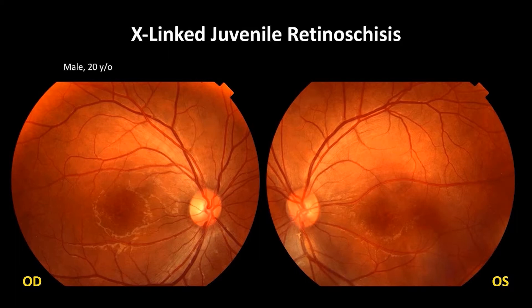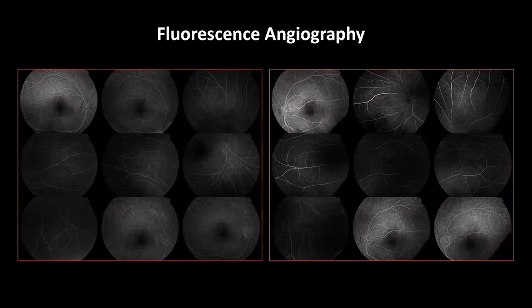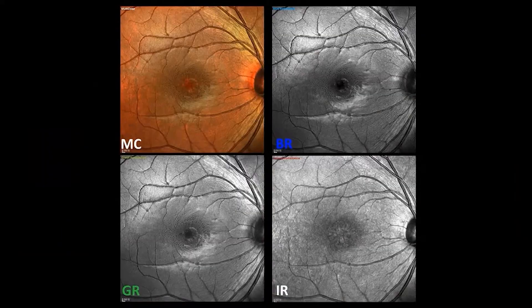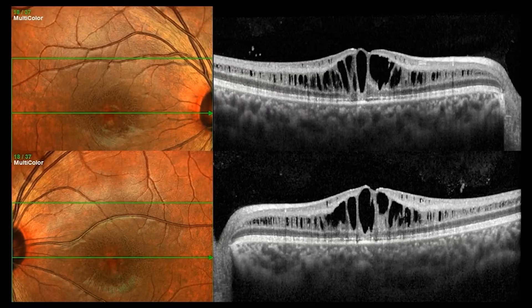This is a case of X-linked juvenile retinoschisis. On color fundus photo, it is not very easy to recognize the abnormality in the macular area. Fluorescein angiography looks basically normal. But when we do multicolor imaging, it showed honeycomb changes in the macula, especially on blue and green reflectance, as well as multicolor on both eyes. Combining with OCT, we can tell that the patient has retinoschisis with no doubt.